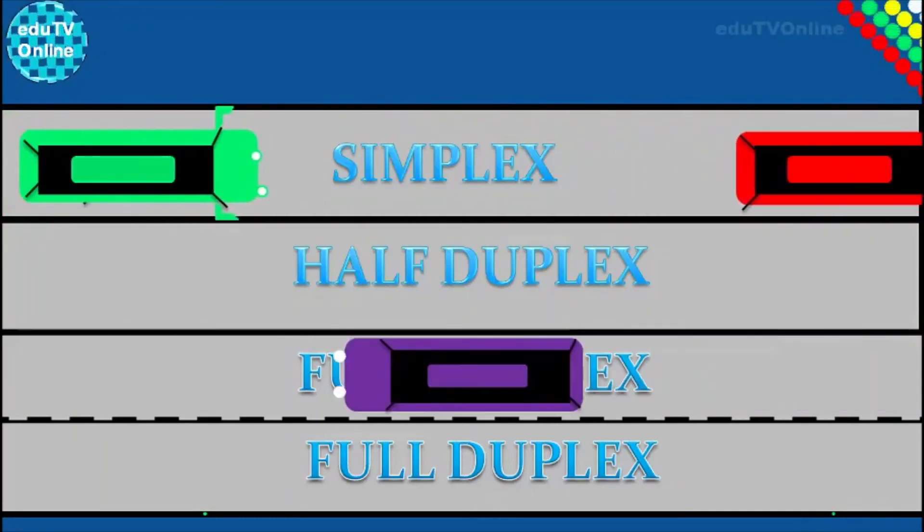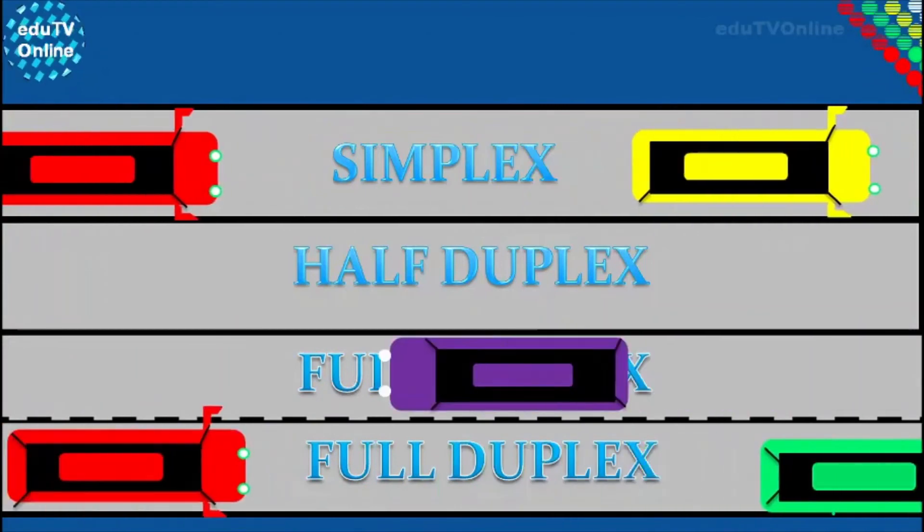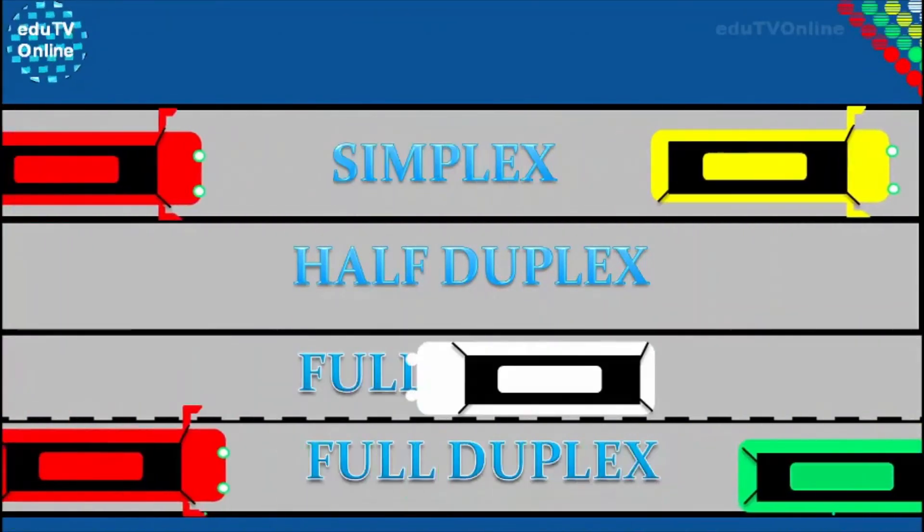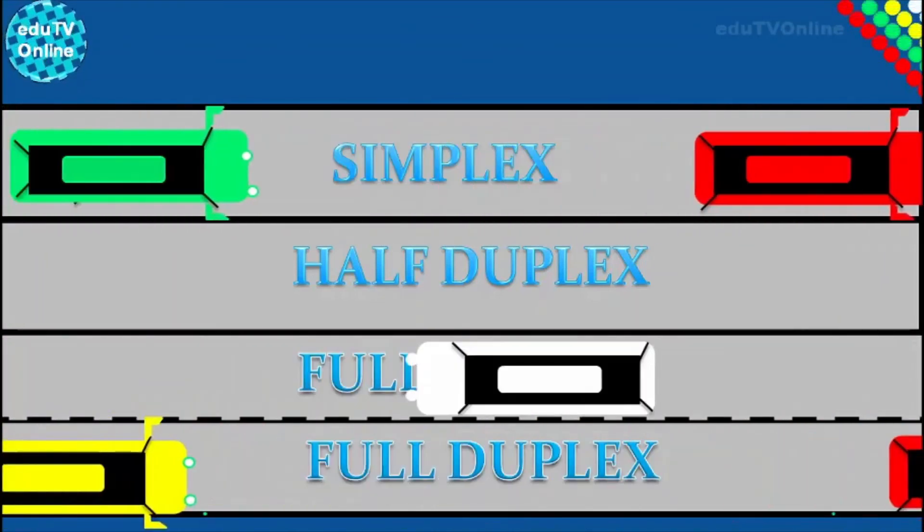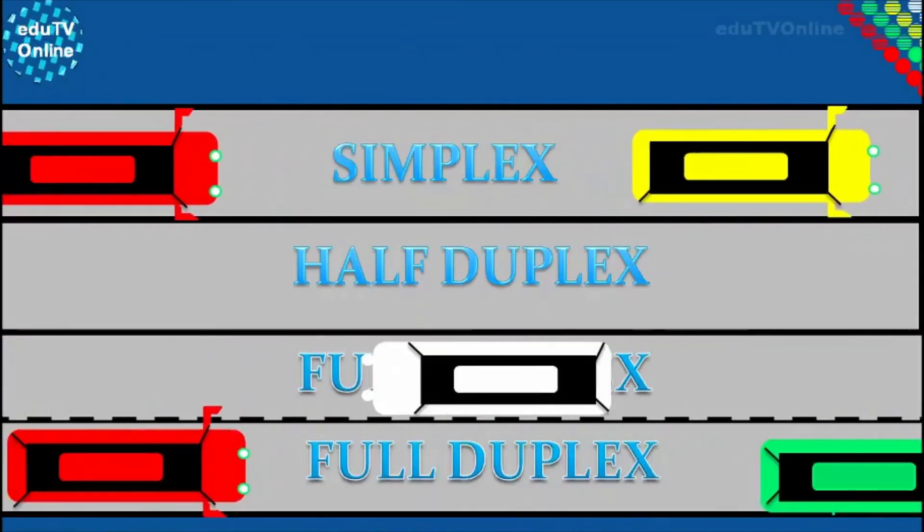But in full duplex, the cars don't have to wait because you can compare full duplex as having a two-lane highway. Each lane is dedicated for a direction. The cars that are traveling in opposite directions have their own dedicated lane as they travel to their destination.